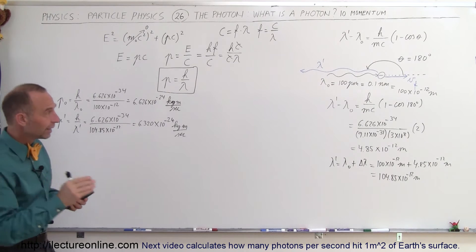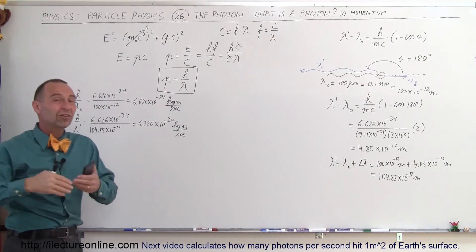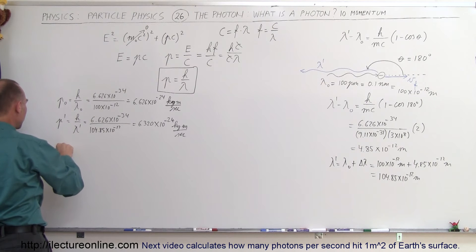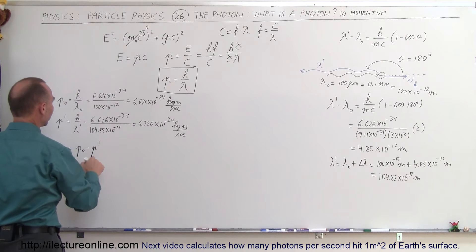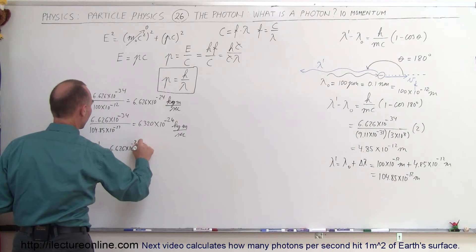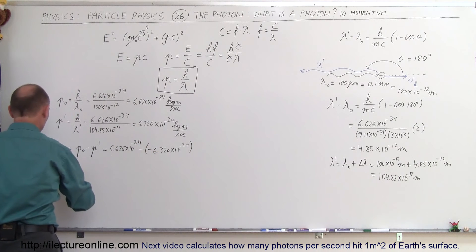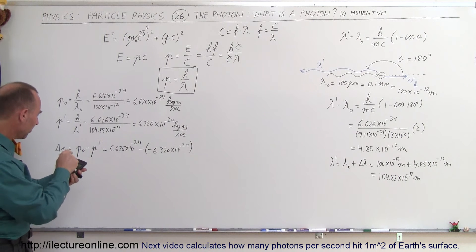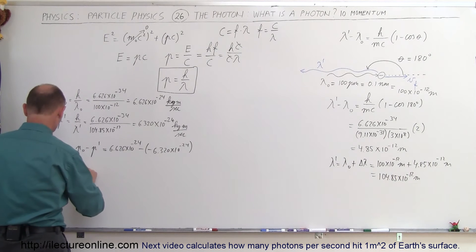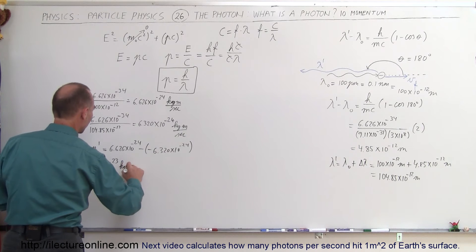We have to be careful with signs: the initial momentum is to the right (positive), and the returning photon has momentum to the left (negative). So the change in momentum is essentially the sum of the two magnitudes, since we're subtracting a negative. Delta-p equals p-initial minus (−p-final) = 6.626×10⁻²⁴ plus 6.320×10⁻²⁴, giving a total change in momentum of 1.295×10⁻²³ kilograms meters per second.